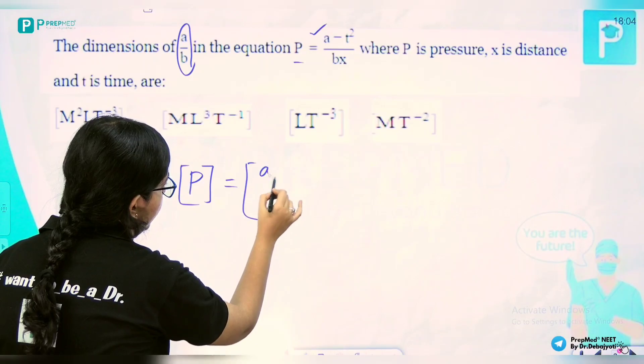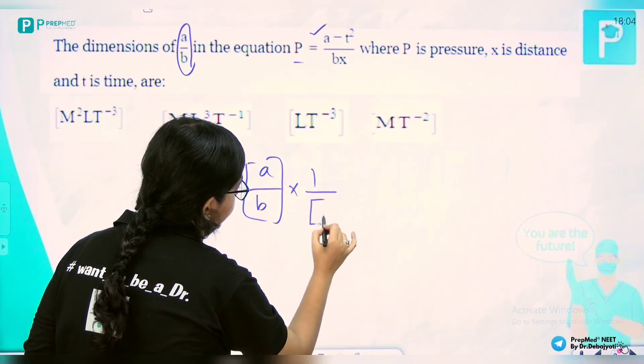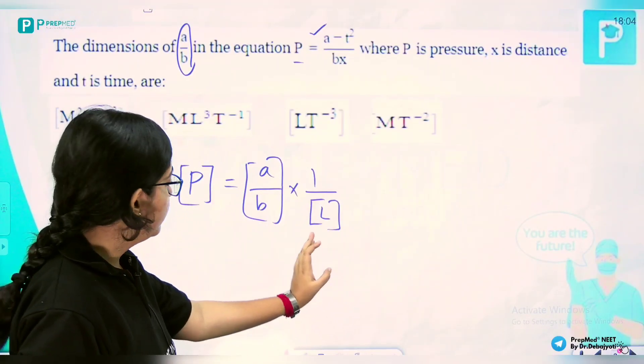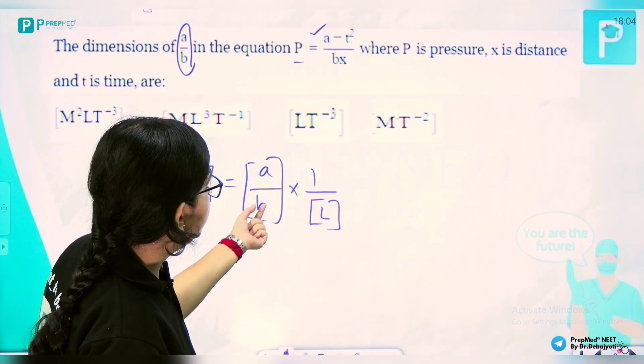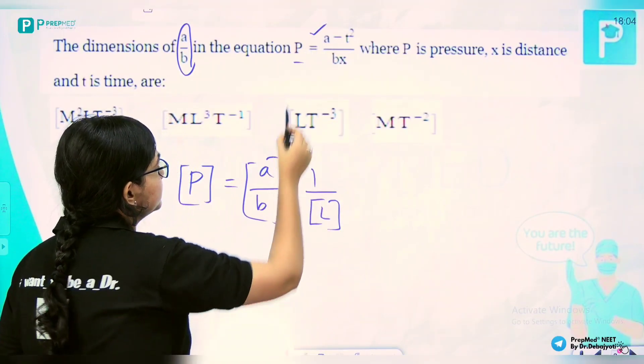to the dimension of a/b times 1/x. In the denominator we have x, so we write L. We write a/b directly because by the principle of homogeneity